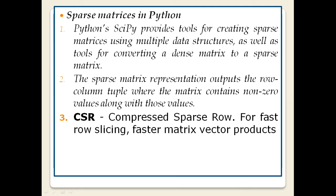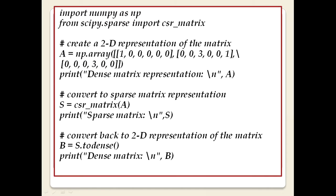The sparse matrix representation outputs the row and column triple where the matrix contains non-zero values, along with those values. We only show the non-zero values and where they lie in the matrix. For this we will use CSR — Compressed Sparse Row — which is efficient for row slicing and faster matrix-vector products.